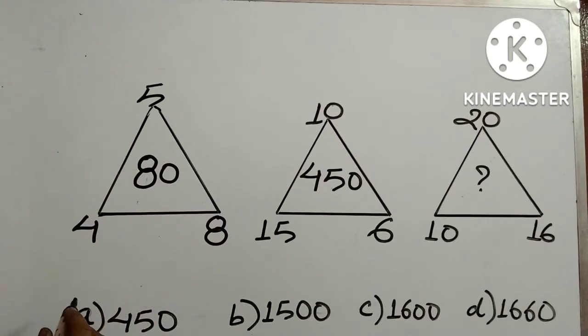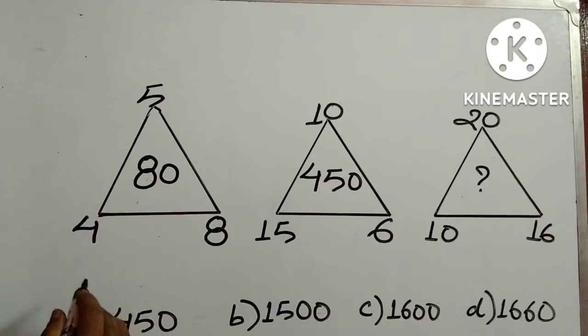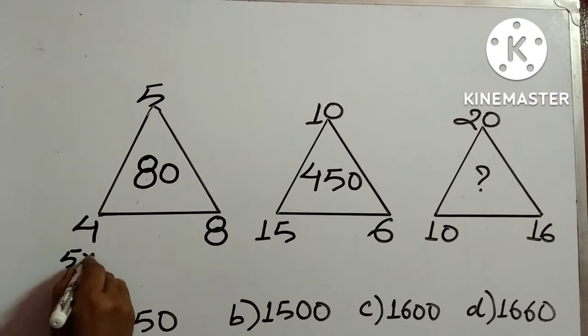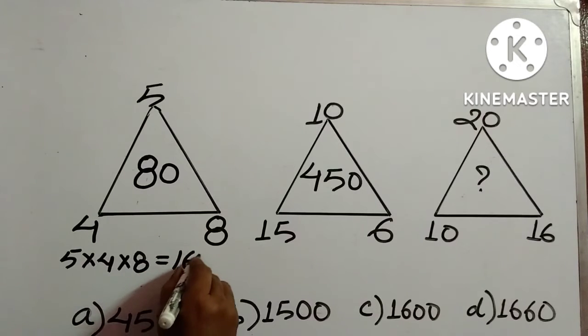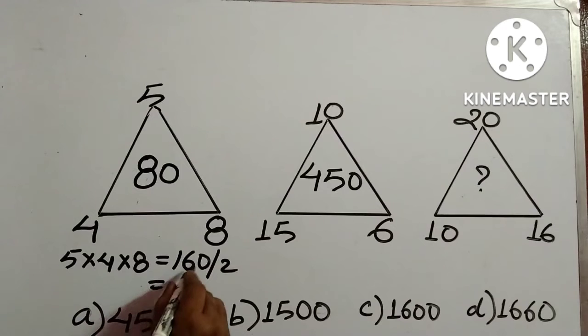So, we will try out the first figure and try to work out how 80 is coming. 5 into 4 is 20 and 20 into 8 is 160 divided by 2. So, 160 by 2 comes to how much? 80.